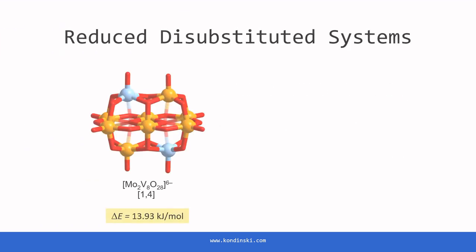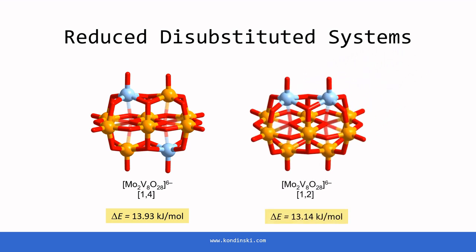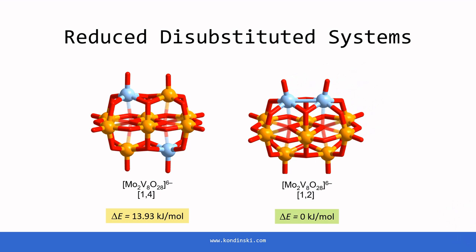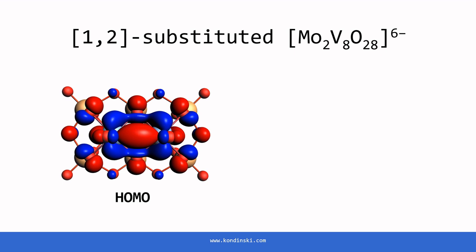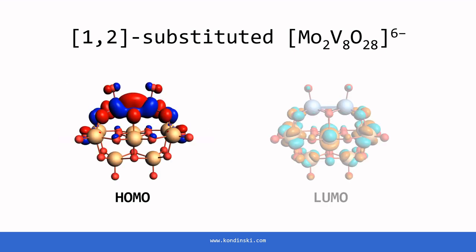Two-electron reduction of the disubstituted systems where molybdenum occupies the A sites, specifically in configurations 1,4 and 1,2, does not initially lead to a significant difference in energy. However, in configuration 1,2, we observe a conformation where two molybdenum centers come closer together, initiating charge localization followed by additional stabilization energy due to metal-metal bonding. Frontier orbital analysis suggests the possibility of charge transfer from these sections to the rest of the cluster.